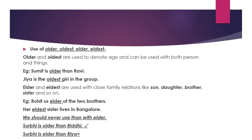Use of 'older/oldest' and 'elder/eldest': 'older' and 'oldest' denote age and can be used with both persons and things. For example, 'Sumit is older than Ravi,' 'She is the oldest girl in the group,' 'These shoes are older now.' 'Elder' and 'eldest' are used with close family relations like son, daughter, brother, sister. For example, 'Rohit is the elder of the two brothers,' 'Her eldest sister lives in Bangalore.' We should never use 'than' with 'elder' — instead use 'to': 'Surabhi is elder to Rhea' is correct, not 'elder than Rhea.'